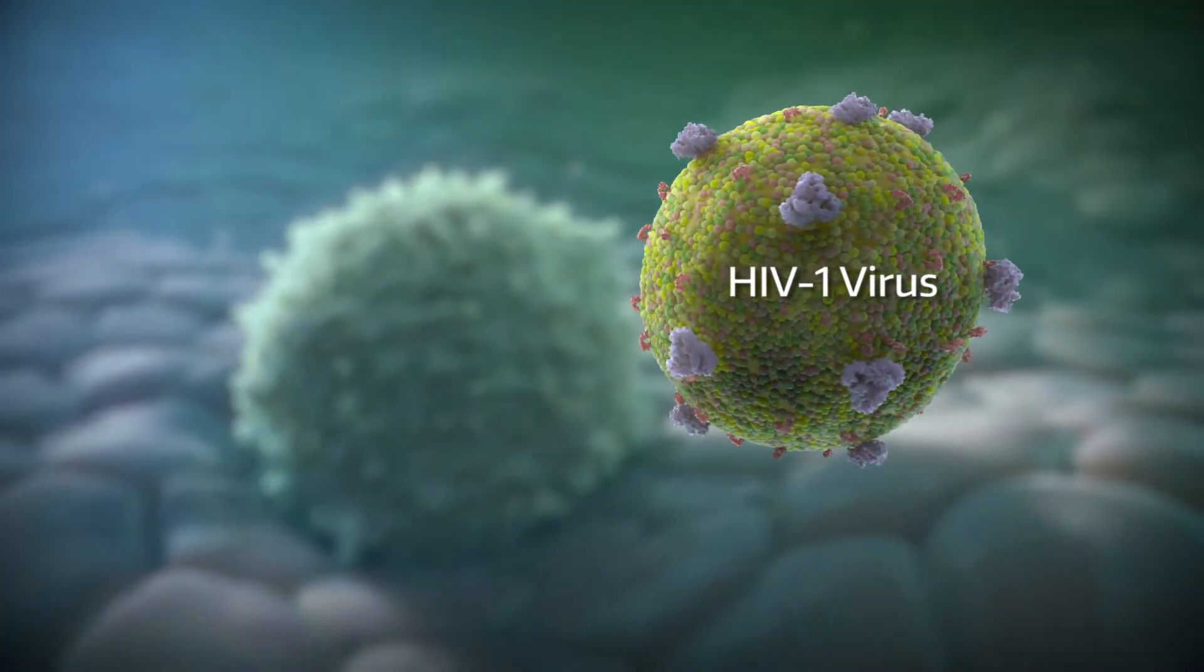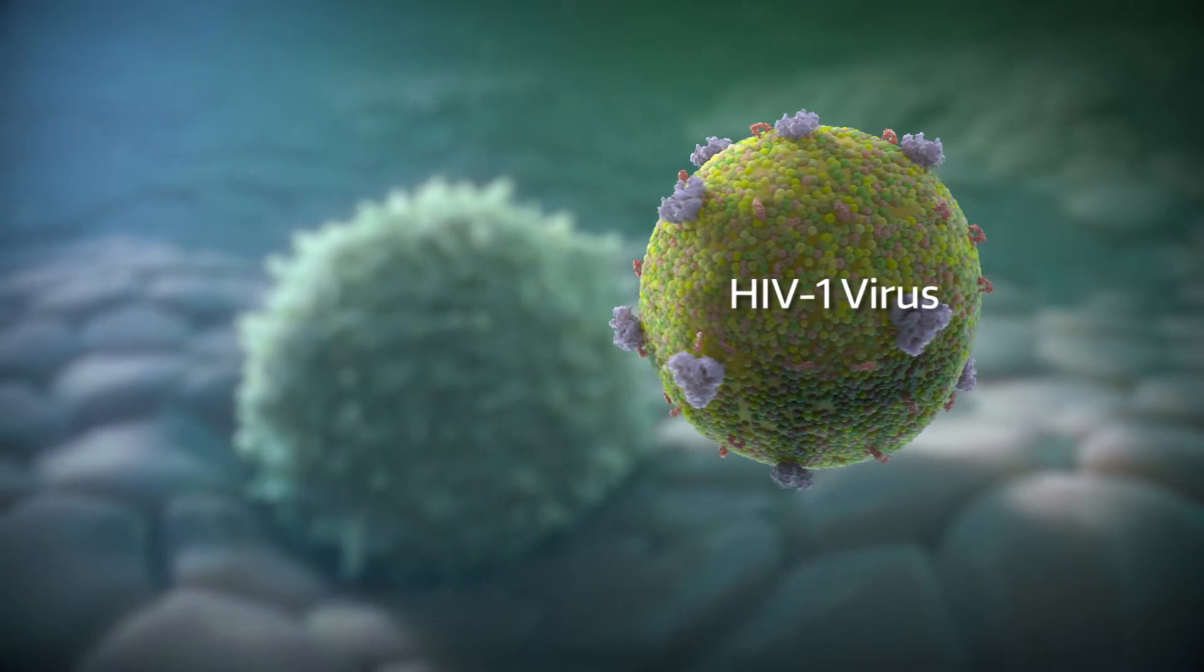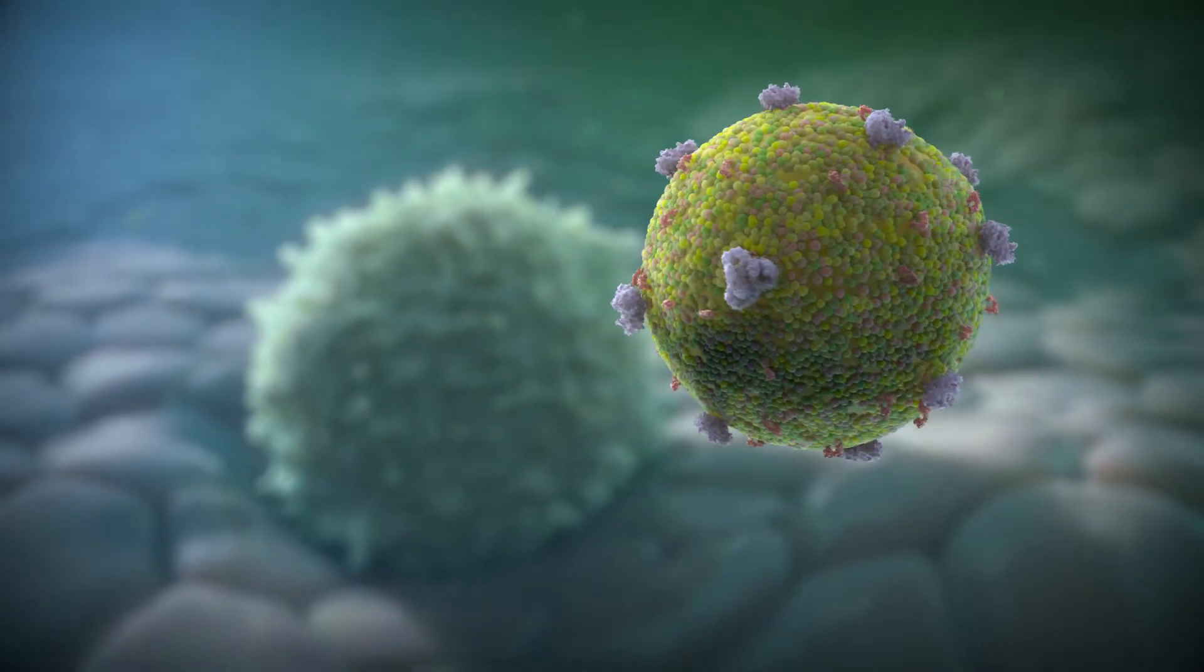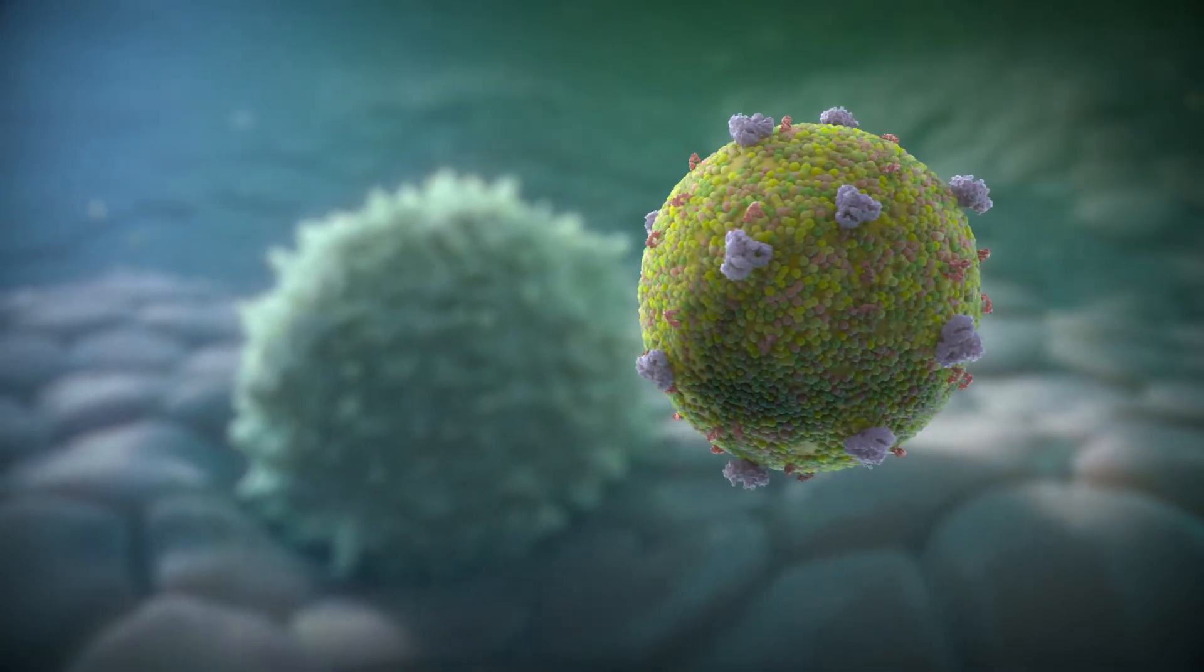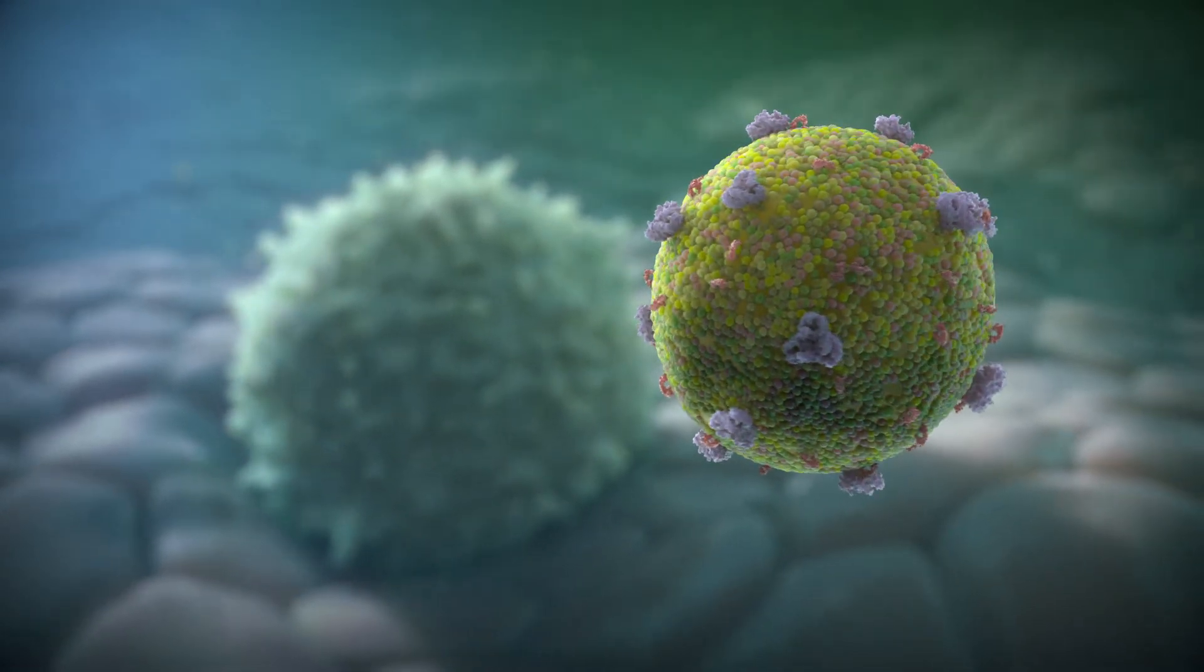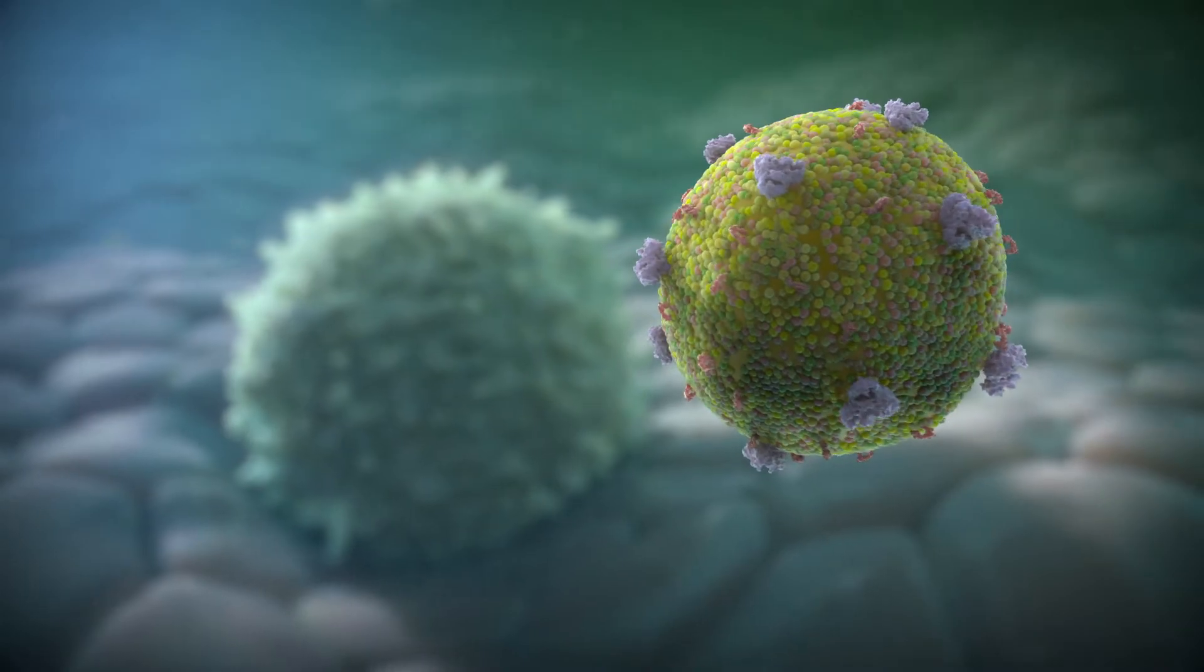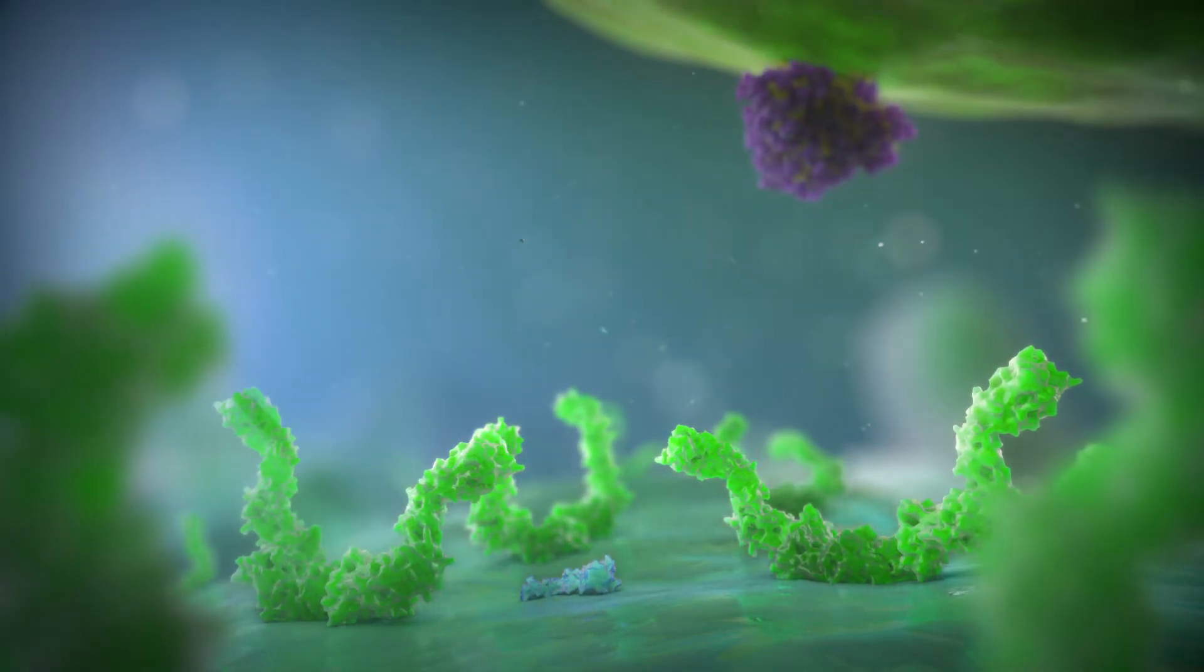HIV is a retrovirus that relies on the body's immune system to replicate. The primary target of HIV is the CD4 positive T cell. The first step in the HIV replication cycle is the entry of a virion into a host T cell.